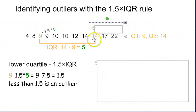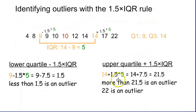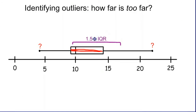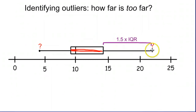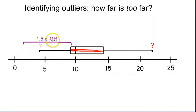On the high end, we have 14 as our third quartile, and we're going to tack on an extra one and a half IQRs. The IQR is five, so one and a half times five is 7.5, added on top of 14 gives us 21.5. Any number more than 21.5 is an outlier. In this case, we have the number 22 in our list, so 22 would be an outlier. Visually, the IQR was the middle five, and one and a half times that is 7.5 — tacked on to 14, that puts us at 21.5, and 22 is just bigger than that.